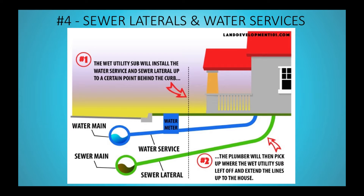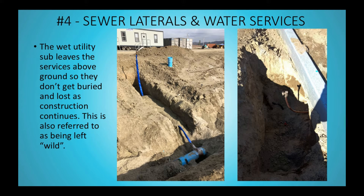Next I want to talk about the sewer laterals and the water services. The pictures on the previous slides for the water and sewer were pictures of the main line. The sewer laterals and the water services are the sections that break off from the main and feed the house. The wet utility sub will install the water service and the sewer lateral up to a certain point past the curb, and later on the plumber will pick up where the wet utility sub left off and extend those lines all the way up to the house.